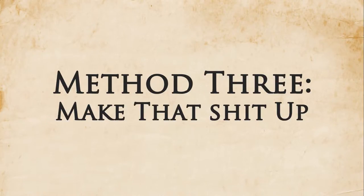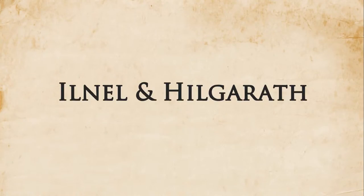Method number three is something I endearingly call 'make that shit up.' This is probably the hardest thing to do and requires a lot of toying around with different combinations. But every now and then, when you're just messing around with these ideas, you can come up with something useful. For Growlt, I probably came up with 80 or 100 names with this method and only ended up using about four of them.